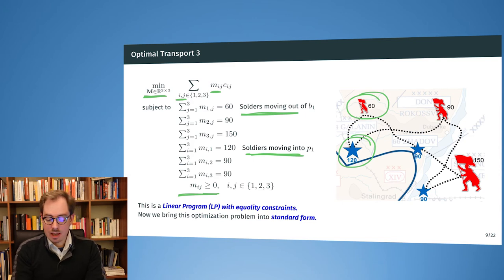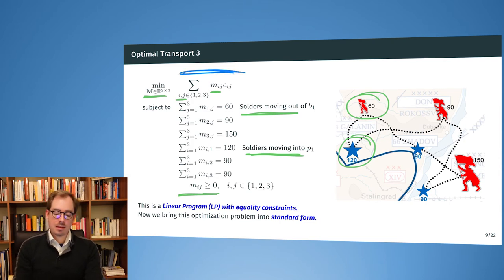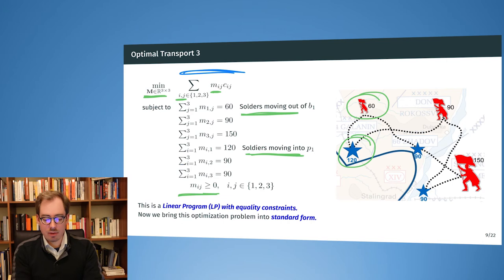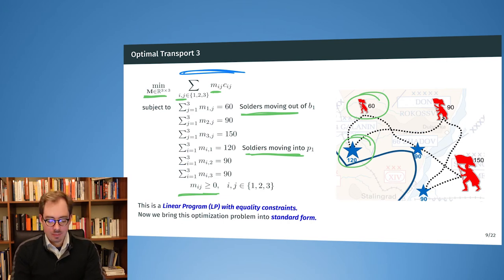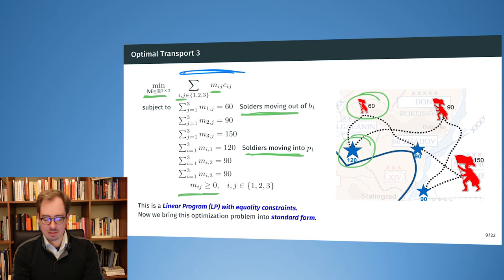This is a linear program because the objective function — the objective term — is a linear term. Now let's bring this into a more standard form. The current formulation looks quite complicated with many constraints, and a standard form makes it easier to reason about and to develop algorithms for.